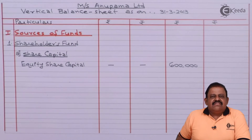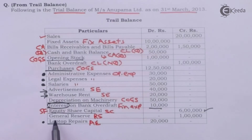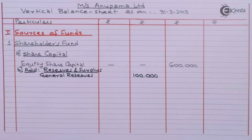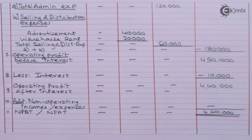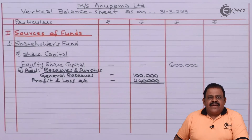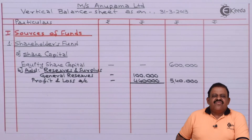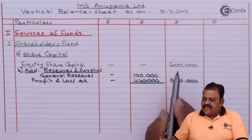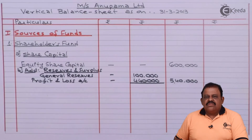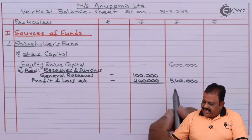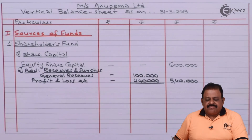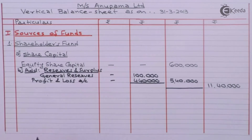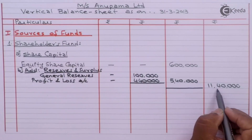To share capital we add reserves and surplus. Under reserves and surplus: general reserve 1 lakh, plus net profit of 4 lakhs 40,000 as surplus. Total reserves and surplus: 5 lakhs 40,000. Share capital 6 lakhs plus reserves and surplus 5 lakhs 40,000 — there are no fictitious assets — so shareholders' fund is 11 lakhs 40,000.